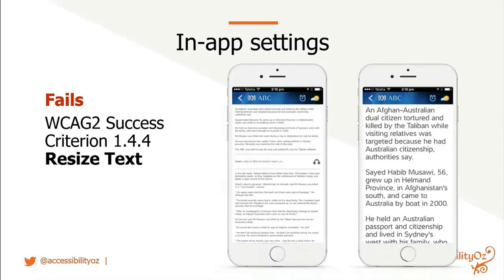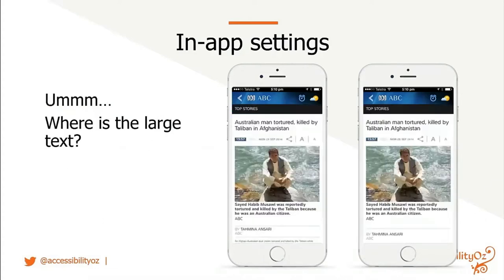This is the ABC — the Australian Broadcasting Corporation — native app. On the left is the absolute smallest text at about six points; on the right is the absolute largest at about 12 points. That doesn't meet WCAG 2's 200% requirement since standard text is about 10 points, failing success criterion 1.4.4 Resize Text. Also, the article title, date, and time at the top of the screen remain the same size whether small or large text is selected, so it's not consistent.